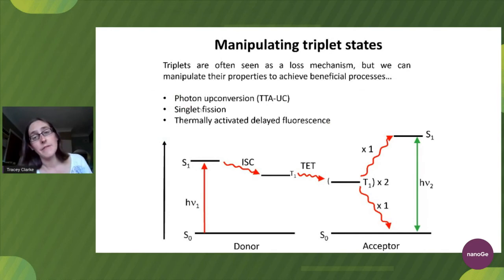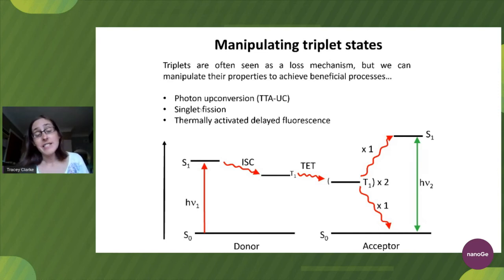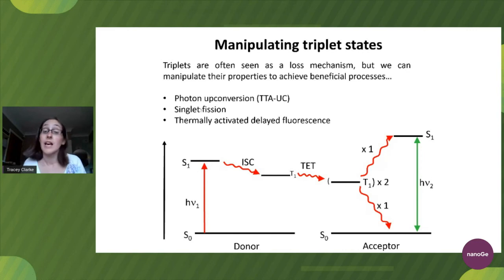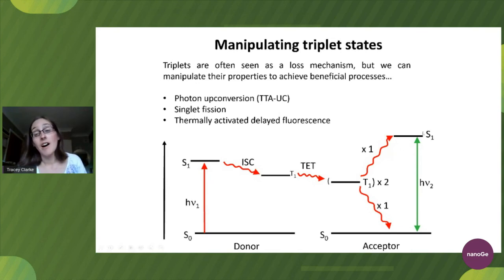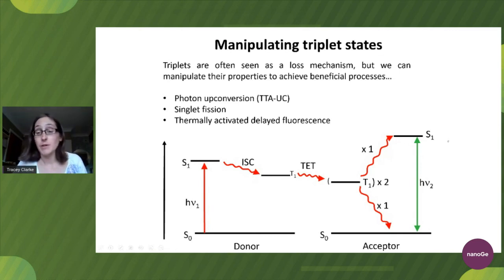In terms of photophysics, we also get triplet states in organic solar cells. This is typically considered a loss mechanism, but recently people have been starting to manipulate their properties and use their unique characteristics to achieve beneficial things. One example is photon up-conversion, where you excite your donor — typically involving a heavy metal to get efficient intersystem crossing — and then get a triplet energy transfer to a lower-energy triplet, which then undergoes triplet-triplet annihilation. You essentially end up with a higher-energy singlet than where you started, enabling you to capture low-energy photons and turn them into higher-energy photons. In an intermediate band-gap solar cell, you could inject this higher energy directly into an electrode.